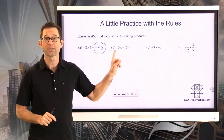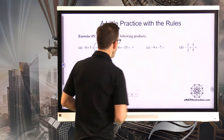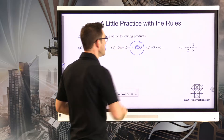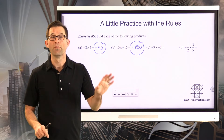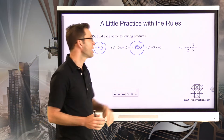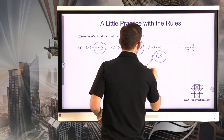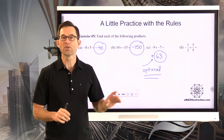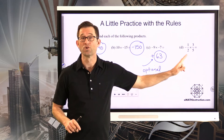Letter B: positive 10 times negative 15. Since one is positive and one is negative, the result is negative. Ten times fifteen is 150, so the answer is negative 150. Letter C: negative 9 times negative 7 — both numbers are negative, so the result must be positive. Negative 9 times negative 7 is positive 63. That positive symbol is optional, but I'll include it to emphasize the distinction.